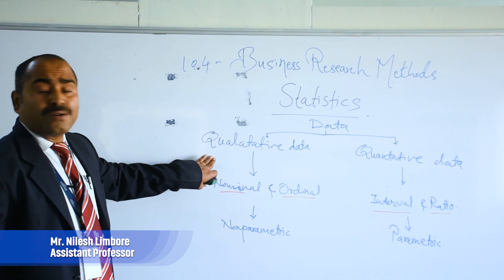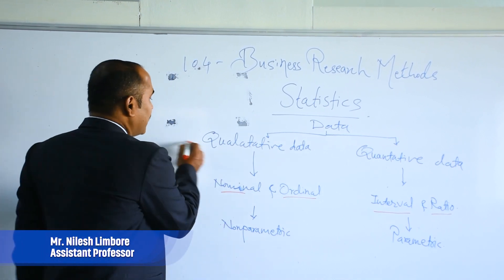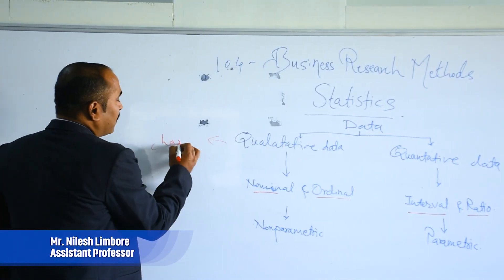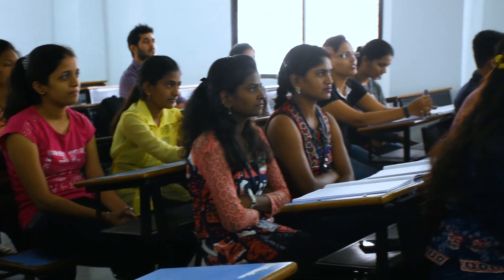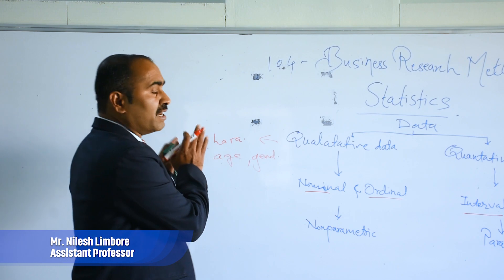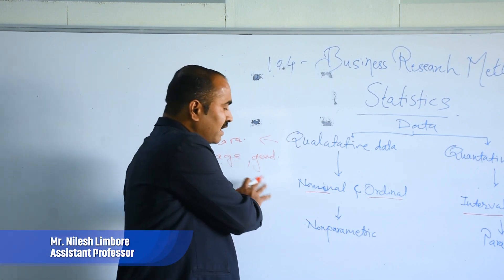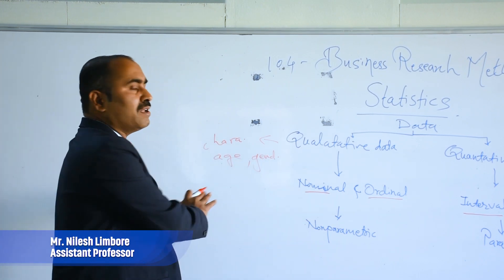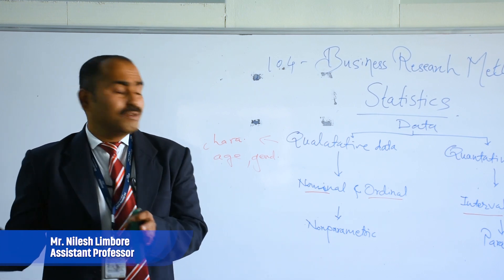What is meant by qualitative data? Qualitative means there is some characteristic of the data — for example, age or gender. This data comes in quality, so we cannot measure it directly. We can rate this data 1, 2, 3, 4. For example, gender: 1 equals male, 2 equals female.